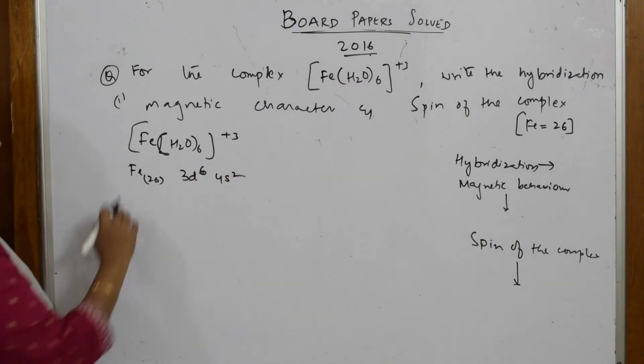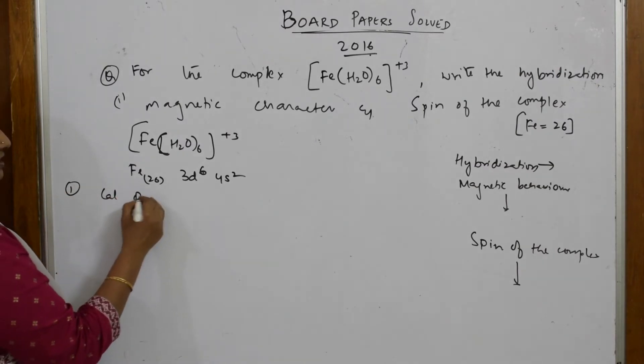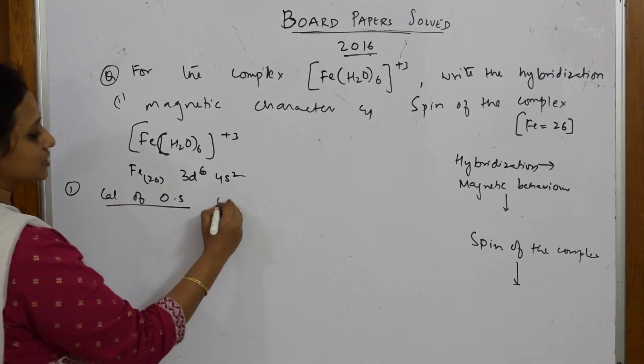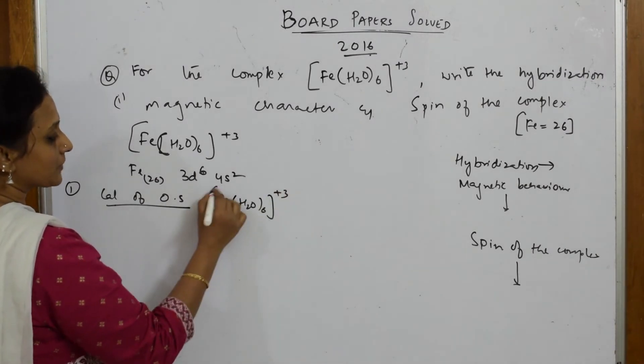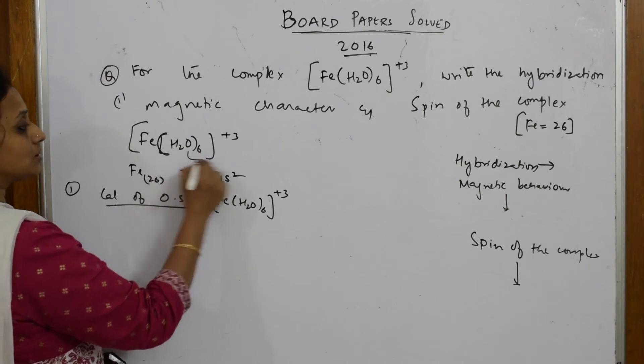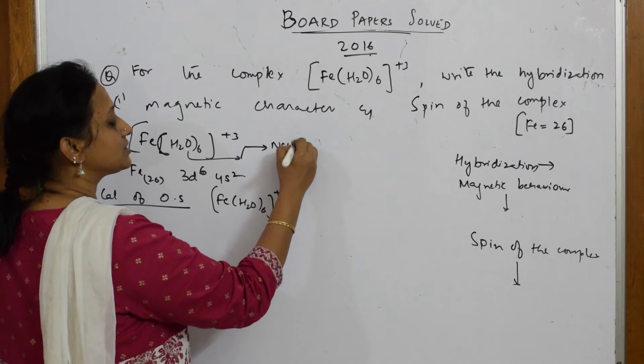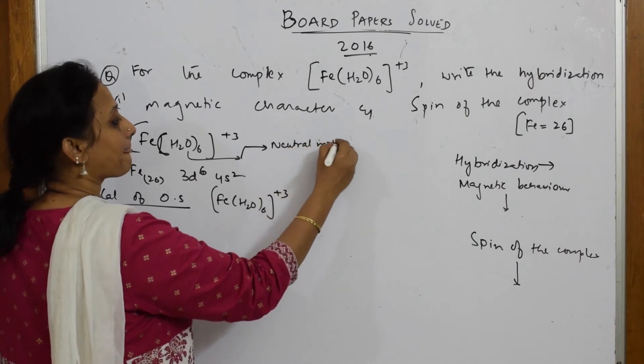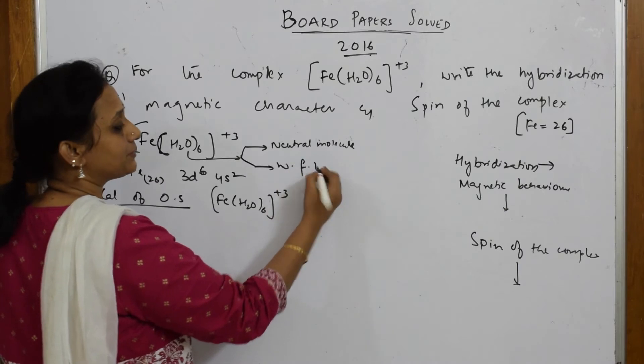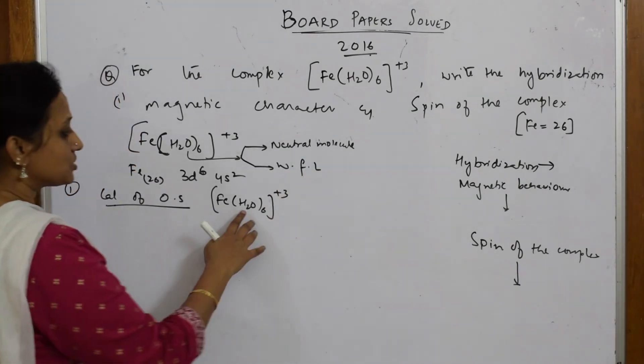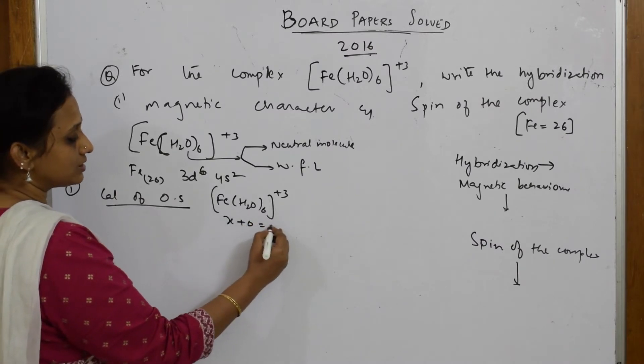Step one: calculation of oxidation state. For this complex Fe(H2O)6³⁺, water is a neutral molecule. Water is a neutral molecule and it is a weak field ligand. The oxidation state is x + 0 = +3, so x = 3.